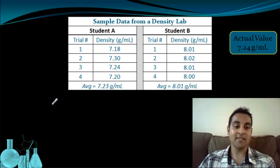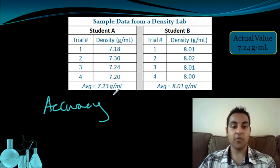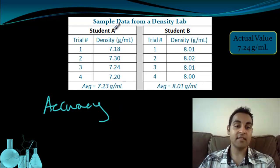The first thing we want to evaluate is the accuracy. Accuracy is how close to the true value or the actual value the measured results were. By taking a look at the individual calculations for density of each student, as well as their final averages, we can see pretty clearly that student A was much closer to the actual value with 7.23 than student B was with 8.01. So we would say that student A's data is more accurate than student B's data.